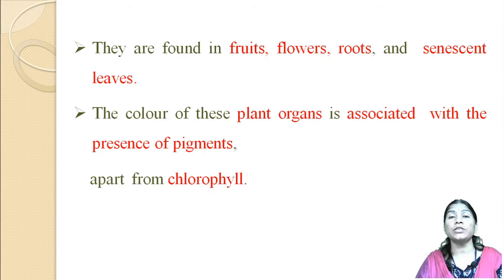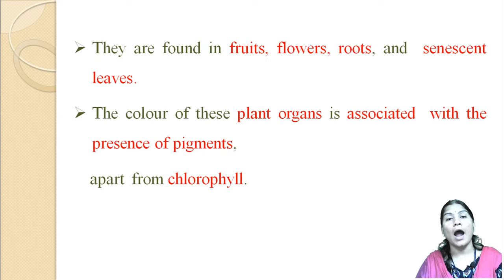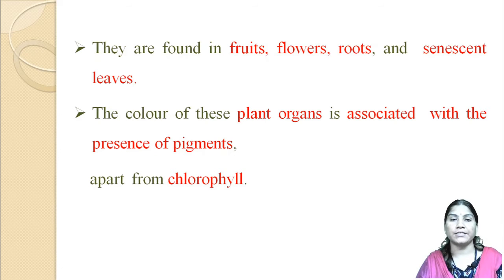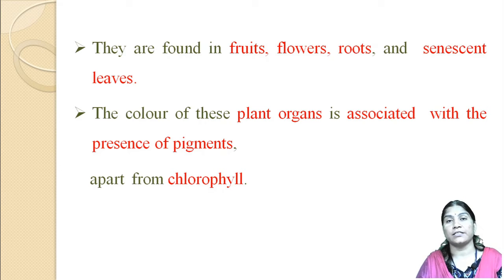These chromoplasts are found in fruits, flowers, roots, and senescent leaves. The color of these plant organs is always associated with the presence of pigment — meaning which pigment is present in which part determines the color appearance.